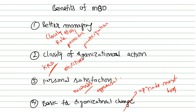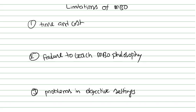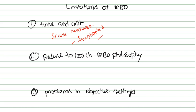Now the limitations of MBO. First, implementing MBO requires money, time, and cost. Proper training must be given to employees and staff — without that they cannot understand how things will work. It requires a large amount of scarce resources. Some people feel frustrated, and some people feel overburdened.